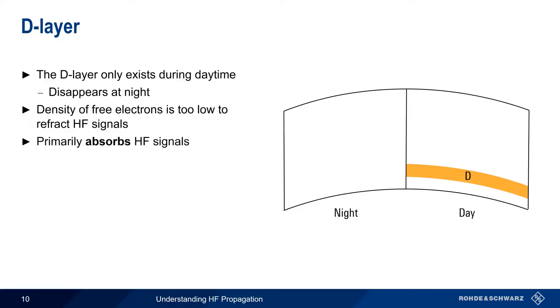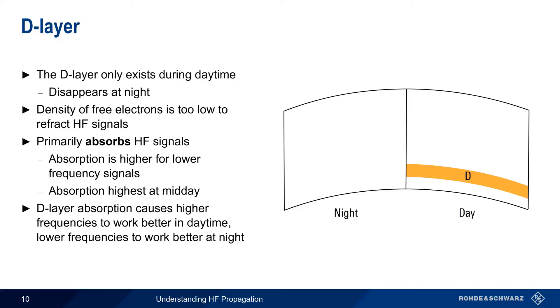This absorption is higher for lower frequency signals than for higher frequency signals. Absorption also increases with increasing ionization, so absorption is usually highest at midday. For these reasons, the properties of D layer absorption mean that higher frequency HF signals work better during the daytime, whereas lower frequency signals work better at night, after this layer has disappeared.